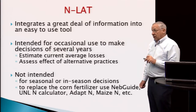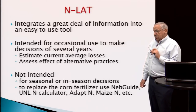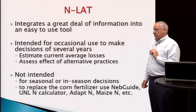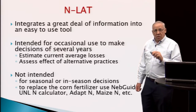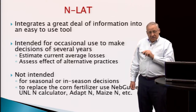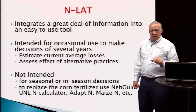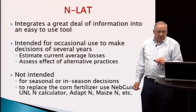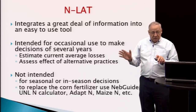The tool is not intended for seasonal or in-season decisions — we have other tools for that, such as our NEBGuide extension circular on corn fertilizer use, the University of Nebraska-Lincoln nitrogen calculator, a tool called ADAPT, and others. These tools are available for helping us make seasonal — that is, preseason and in-season — decisions on how much nitrogen to apply. NLAT is more of a strategic tool: should I be using inhibitors, should I be doing side-dress application or fertigation, or what's the effect of reducing or increasing nitrogen rates or irrigation rates?